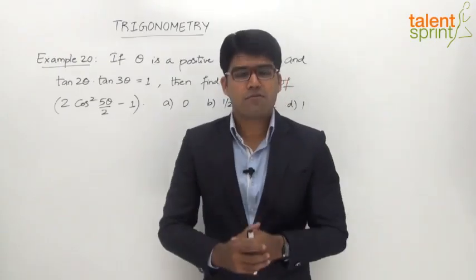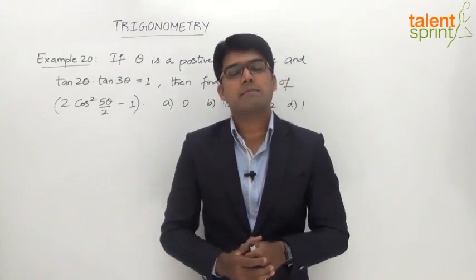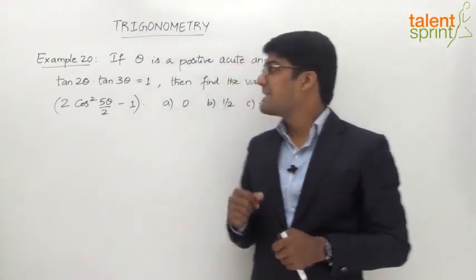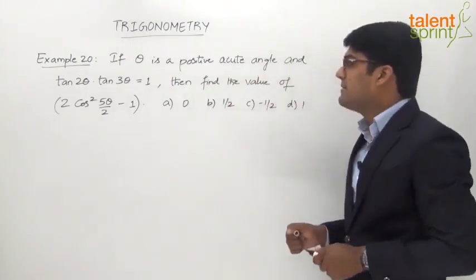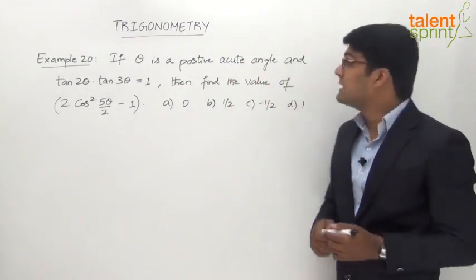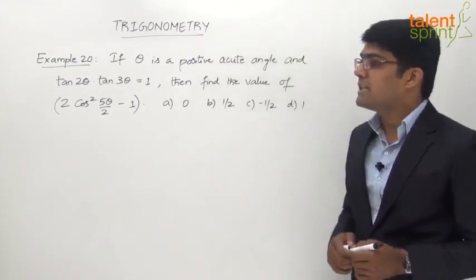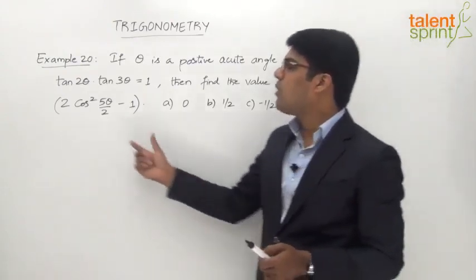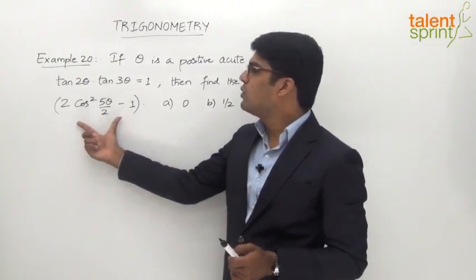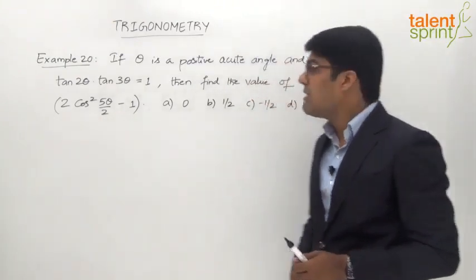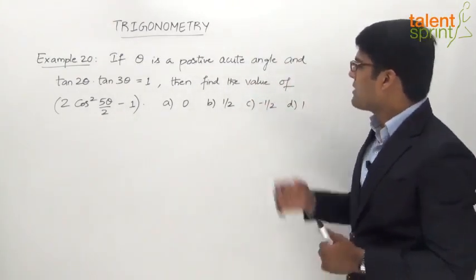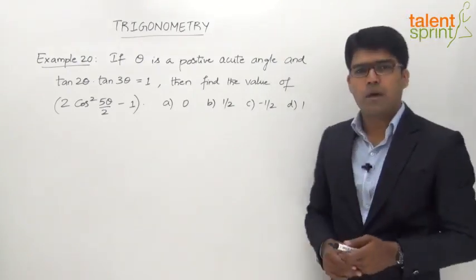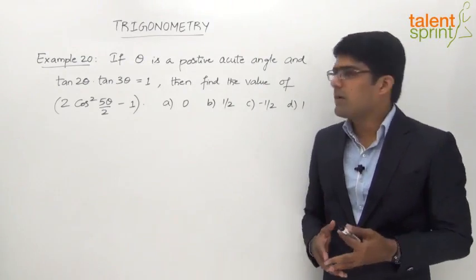Having done with the concept of minimum and maximum values, let us now discuss a few miscellaneous questions. Example 20: if theta is a positive acute angle and tan 2 theta multiplied by tan 3 theta equals 1, find the value of 2 cos square 5 theta by 2 minus 1. The given answer options are 0, 1/2, -1/2, and 1.